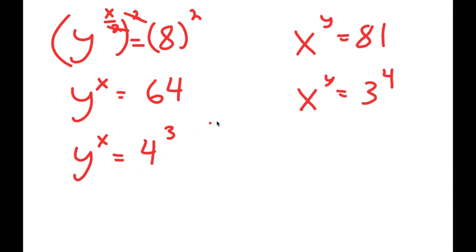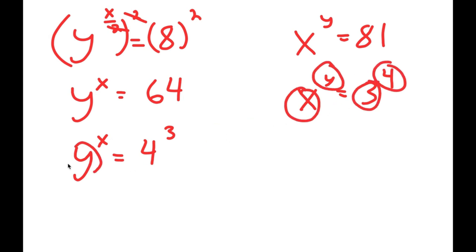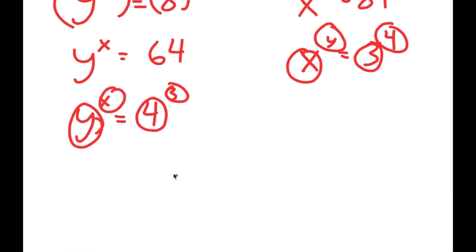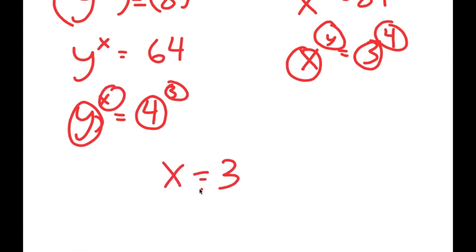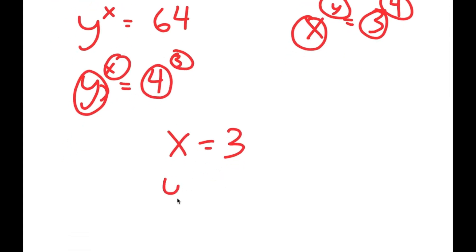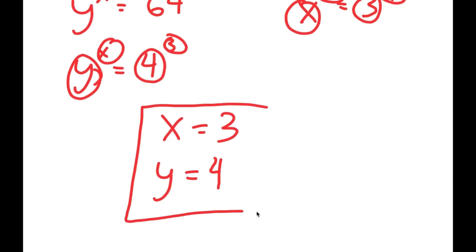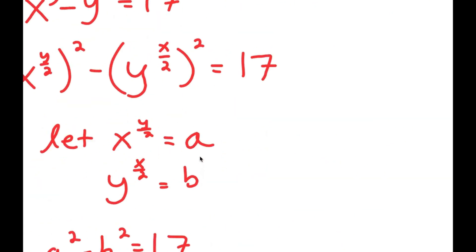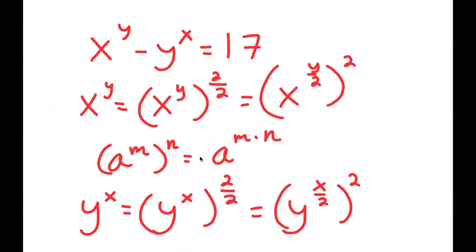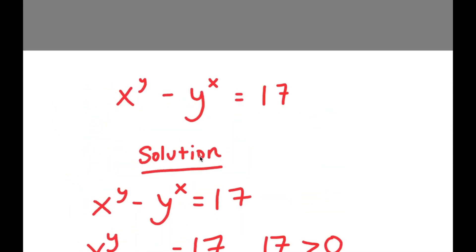So I have x to the power of y equals 3 to the power of 4, and y to the power of x equals 4 to the power of 3. Well, what does that mean? Here y is 4 and x is 3, and over here y is 4 and x is 3, meaning x equals 3 and y equals 4. So this is my solution to this equation.